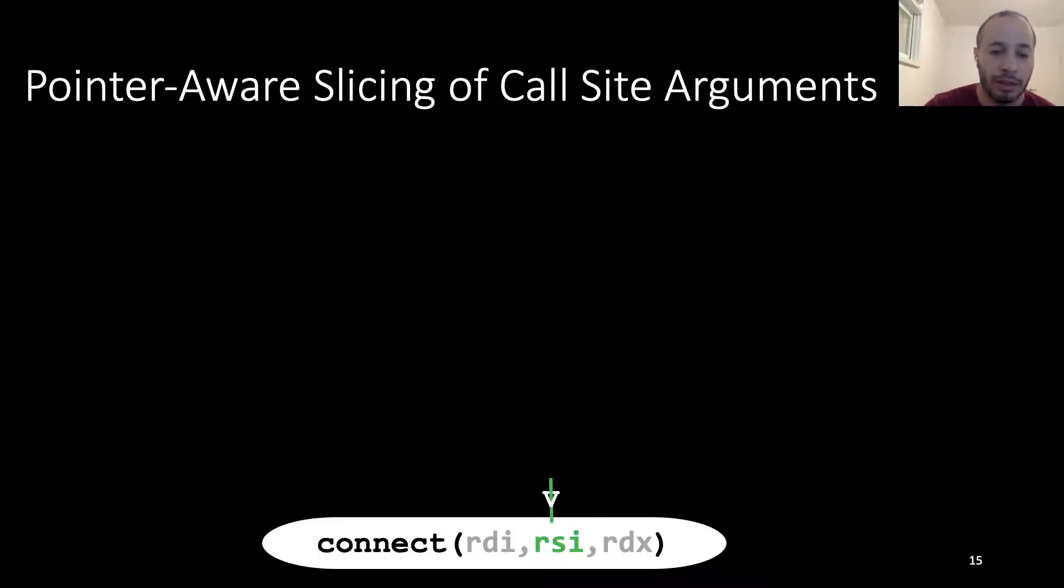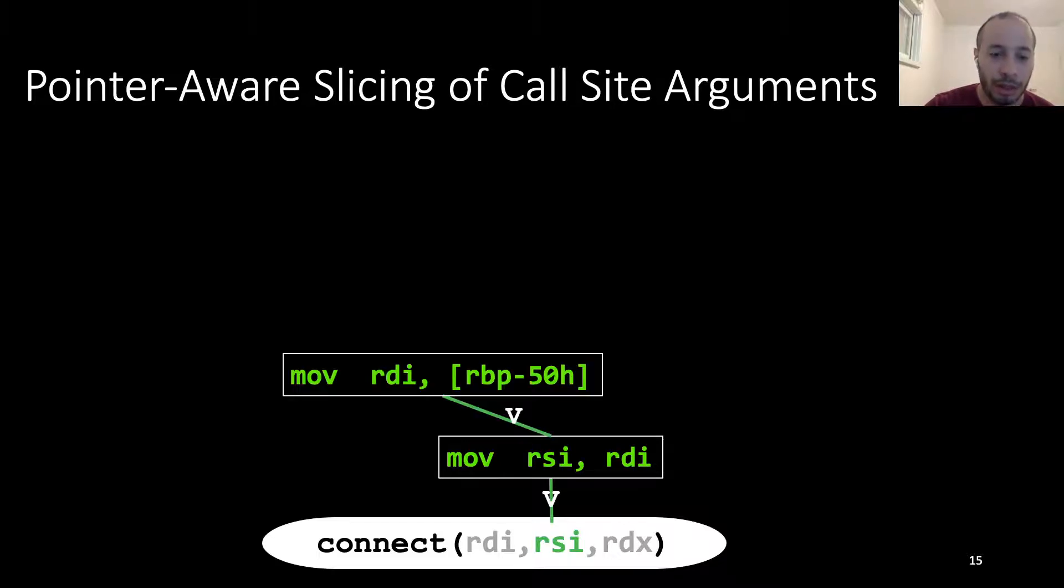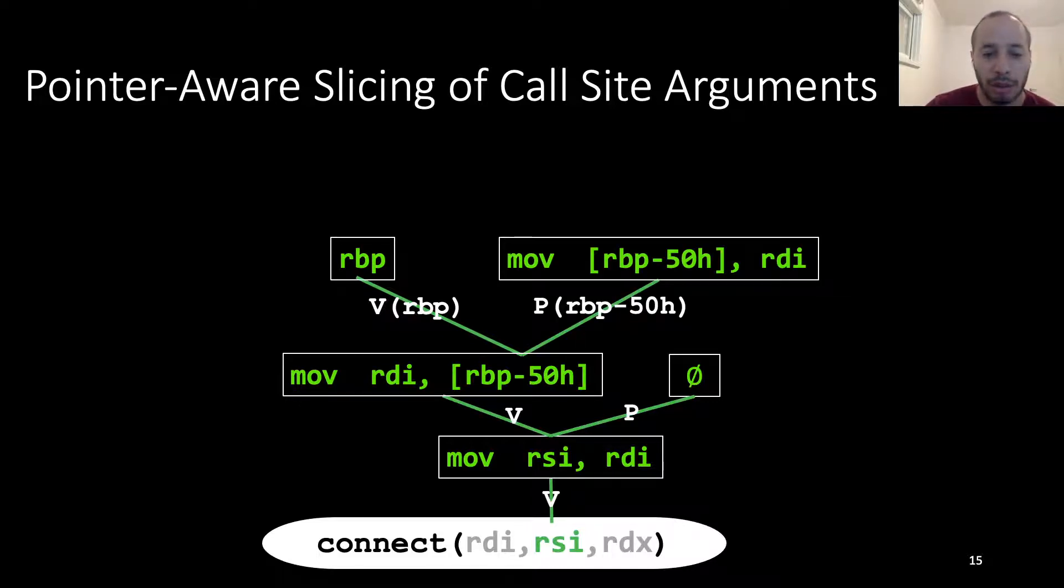We start by the RSI register from the connect call site. We'll start by following the value stored in the RSI. We see that just before the call, the RSI is assigned the value of RDI. We will now follow its value. We see that the value of RDI was assigned from a memory address, RBP-50. We will also follow the pointers. In this case, we see that RDI is not used as a pointer. We keep following the values. We see that RBP is never assigned inside the procedure. On the other hand, we see that the address of RBP-50 is assigned another value, and we keep following this one, RDI, we see that this is not assigned in another place in the procedure, and the pointers are not changed.